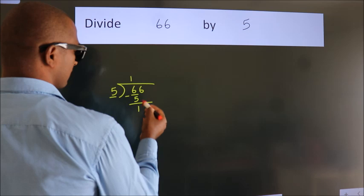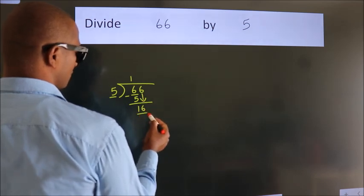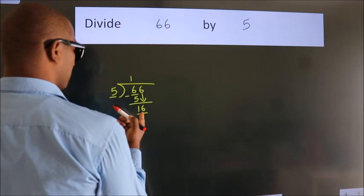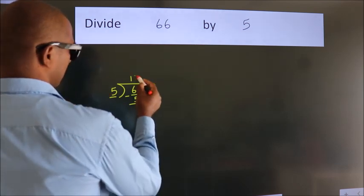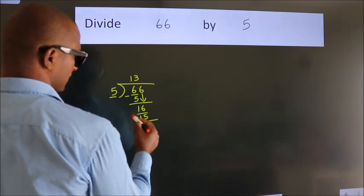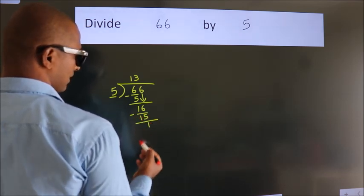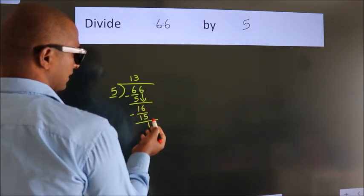After this, bring down the beside number. So 6 down, giving us 16. A number close to 16 in the 5 table is 5 threes 15. Now we should subtract. We get 1. After this, no more numbers to bring down.